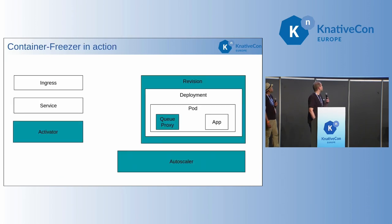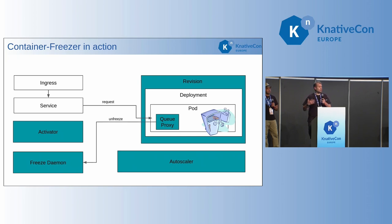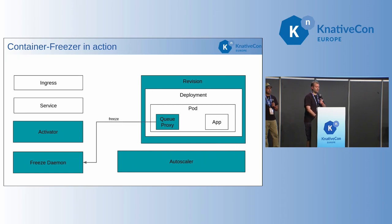The container freezer works like this: there's a separate freeze daemon that runs alongside the pod. When the request comes in, it follows the same process and gets to the queue proxy. The queue proxy calls out to the daemon, sends it an unfreeze request, and we send a resume request to the container runtime — in Containerd it's 'resume', and there's a PR out for CRI-O as well. The request then goes to the application as normal. The nice thing is you can leave your pod running but paused between requests. When the request is finished, the queue proxy sends a freeze request and the pod gets frozen.